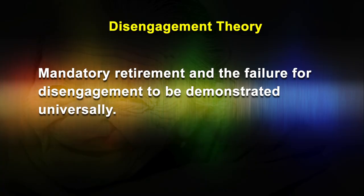While empirical data may demonstrate reduced social activity with increasing age, the inevitability, universality, and essentially adaptive nature of these changes remain unproven. Indeed, the veracity of disengagement theory is further compromised because of the involuntary nature of many disengagements, such as mandated retirement, and the failure for disengagement to be demonstrated universally.